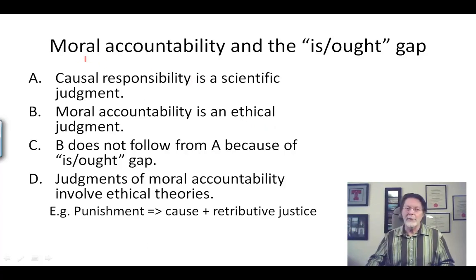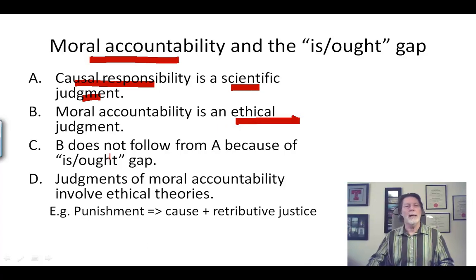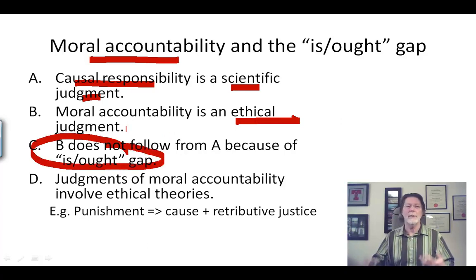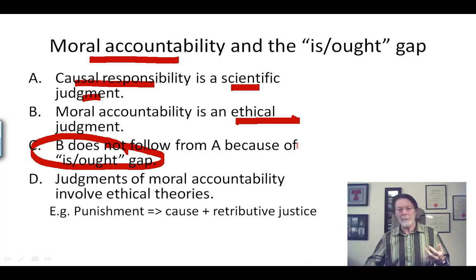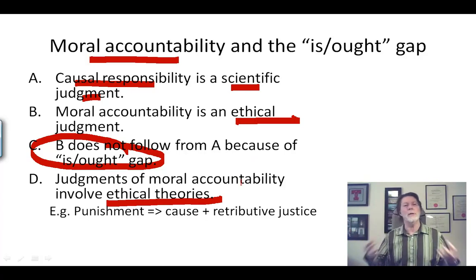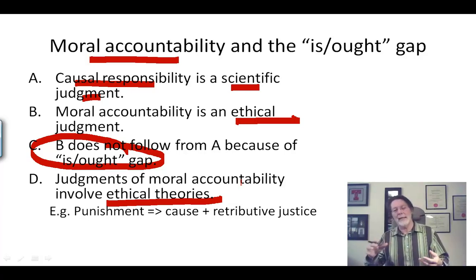There is a big difference between moral accountability and causal responsibility. Causal responsibility is a scientific judgment, and moral accountability is an ethical judgment. Moral accountability does not follow directly from causal responsibility because of the is-ought gap — you can't directly derive a statement of what you ought to do from statements about how the world is. Judgments of moral accountability sometimes involve judgments of causation, but they always involve ethical theories. The ethical theory enables you to cross the is-ought gap.